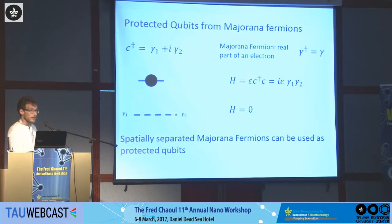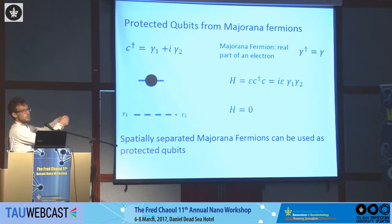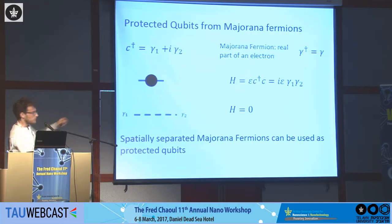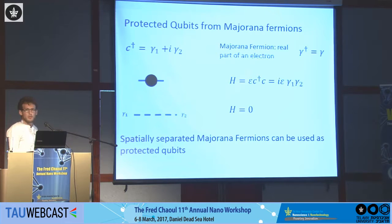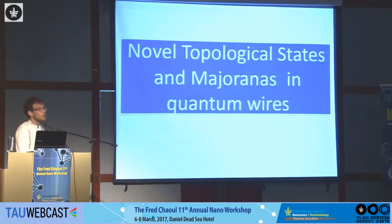This is where Majorana fermions become useful. Each fermion is like a complex number composed of two real components: each fermionic level is essentially composed of two Majorana states γ₁ and γ₂, and the coupling to the environment H is basically a coupling between these two Majorana components γ₁ × γ₂. If we could make one fermion composed of two Majorana modes very far apart, the coupling between them would be exponentially small, yielding a qubit that is perfectly protected. It turns out this can be achieved using the physics of topological insulators.